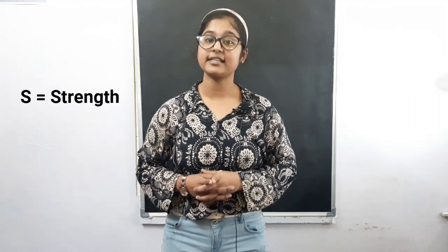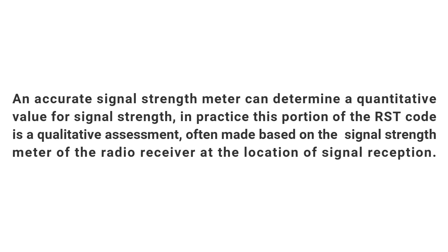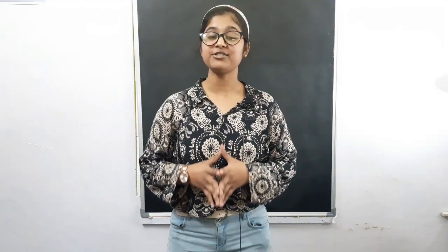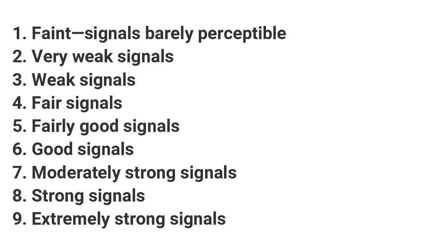S stands for strength, which is an assessment of how powerful the received signal is at the receiving end. Although an accurate signal strength meter can determine a qualitative value, in practice this portion of the RST code is a qualitative assessment, often based on the signal strength meter of the radio receiver. Strength is measured on a scale of 1 to 9. One: faint signals, barely perceptible. Two: very weak signals. Three: weak signals. Four: fair signals.